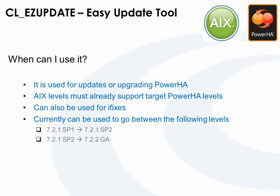When can you use it? Right now there are only a couple of levels. This tool is used specifically for the Power HA file set. You can use it for loading an SP or performing an upgrade — the AIX levels must support the target level you're trying to move to. It can also be used for iFixes, though I haven't tested that personally. What I'm going to demonstrate here is an update from 721SP1, currently installed, to SP2 non-disruptively.